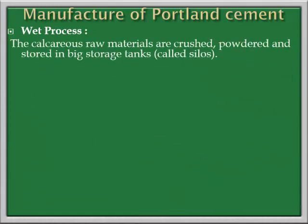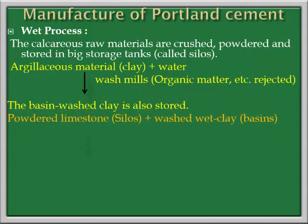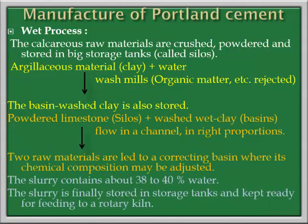The next step is the wet process. The calcareous raw materials are crushed, powdered and stored in big storage tanks called silos. Then the argillaceous materials are mixed with water and subjected to wash mills. The obtained product is called basin-washed clay and is stored. Silos and basins are mixed with each other and allowed to flow in a channel to get the right proportions. Their chemical composition is checked, and this slurry contains about 38 to 40 percent water. The slurry is finally stored in storage tanks and kept ready to feed to a rotary kiln.